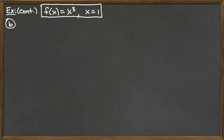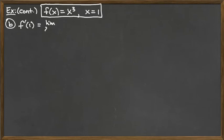We need to utilize the z approaches c definition. I think you'll see some similar things happening through this computation, but the algebra plays out a little differently. So we've got f prime of 1 that we're still trying to find, and this time we use the limit as z approaches c. The c here is 1, since that's the given x value. So it's the limit as z approaches 1 of f of z minus f of 1 over z minus 1.